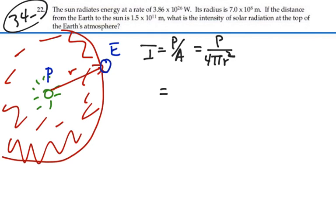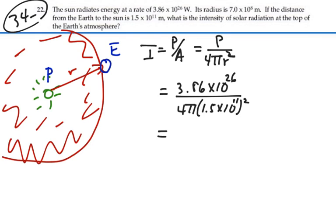So this is going to be the power of the sun, 3.86 times 10 to the 26 watts, distributed over an area of a sphere of 4 pi times 1.5 times 10 to the 11 meters squared. In other words, that's the distance from the earth to the sun. And that's going to give us what?